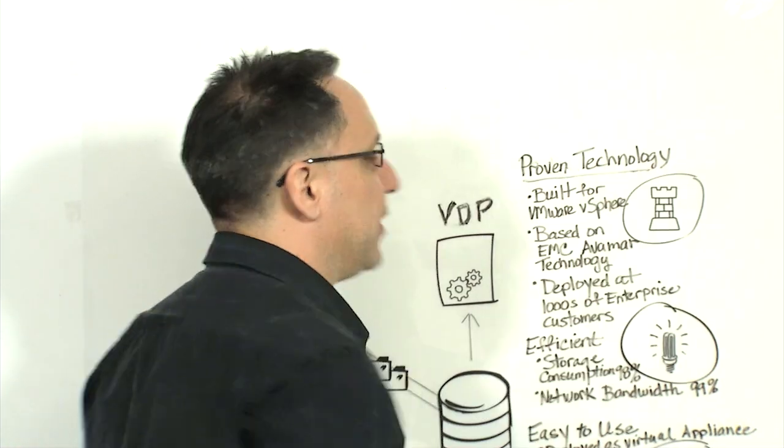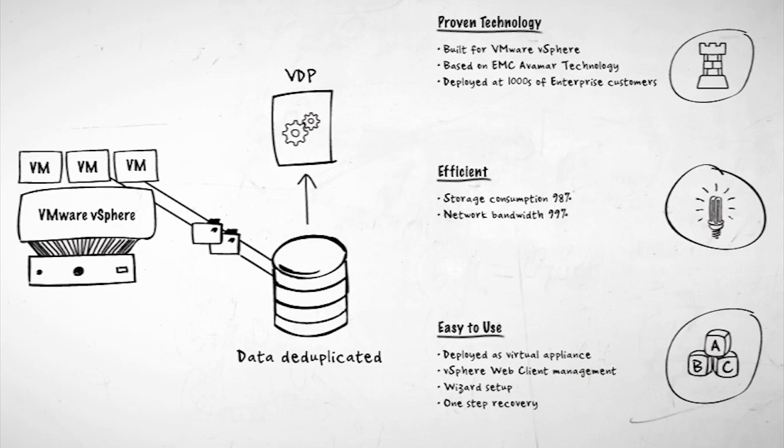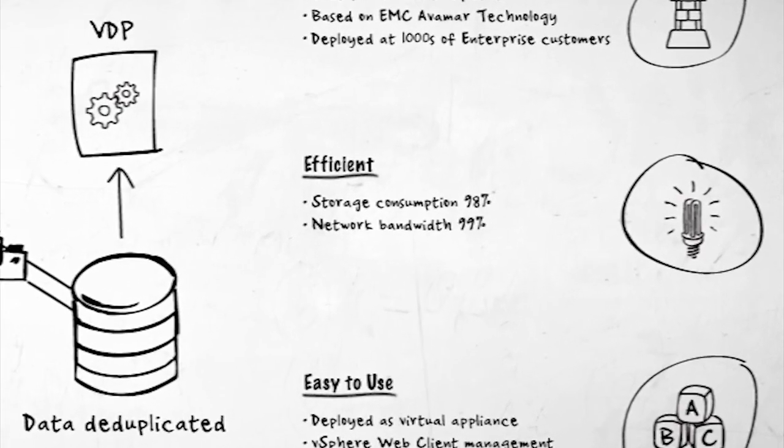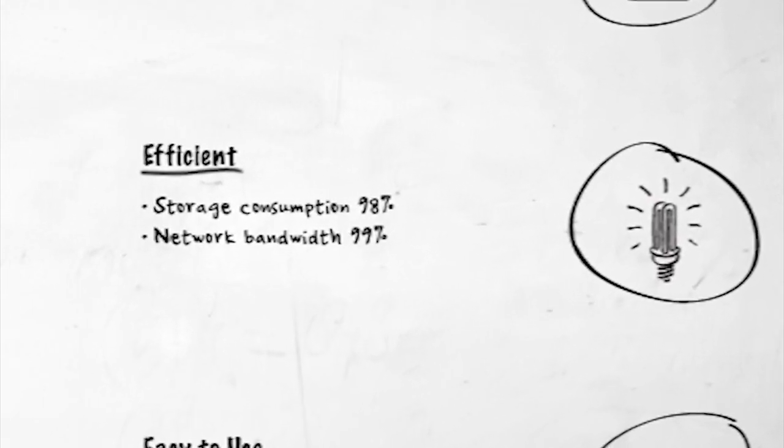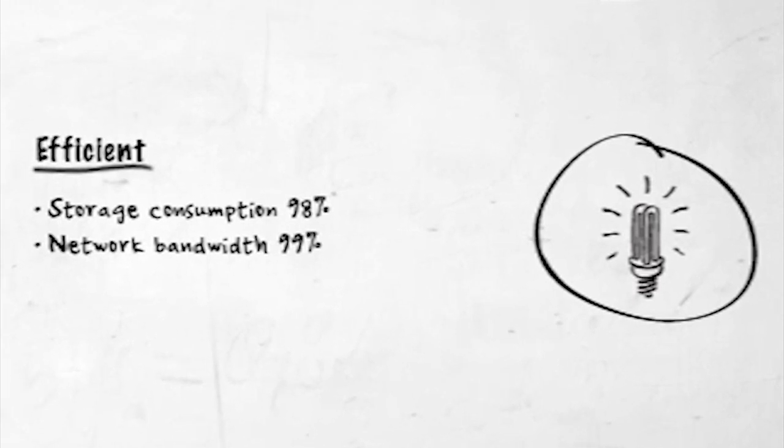vSphere data protection is a proven technology built for VMware vSphere. It's based on EMC Avamar technology, which has been deployed across thousands of customers. vSphere data protection is efficient, taking advantage of unique deduplication as well as change block tracking, helping to drive down storage consumption by up to 98% and network bandwidth by up to 99%.